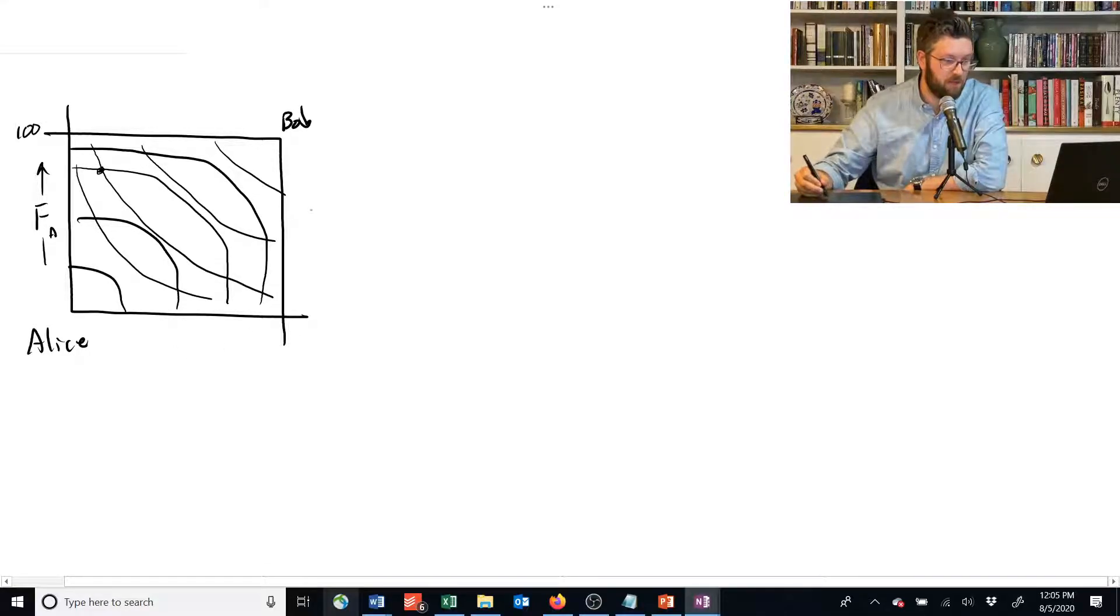We've got food for Bob being measured in this direction, from also 0 to 100. We've got shelter for Alice being measured in this direction, from 0 to 300. And we've got shelter for Bob being measured in this direction, from 0 to 300.